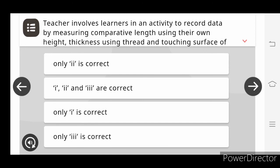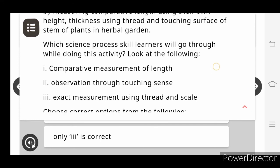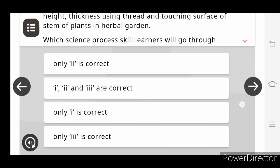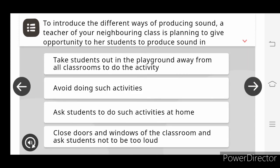The teacher involves learners in an activity to record the data by measuring comparative length using their own height, thickness using threads, and touching surface of stem of plants in herbal gardens. Which science process skills learners will go through while doing this activity? Here first, second, and third are the correct.